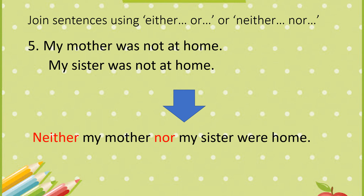Number five: 'My mother was not at home' and 'My sister was not at home' — combined: 'Neither my mother nor my sister were home.' Why do we use 'were' here instead of 'was'? Because in each original sentence there is only one subject, so 'was' is used, but in the combined sentence we have both mother and sister, so we use 'were.'